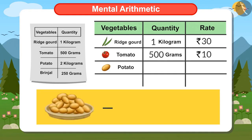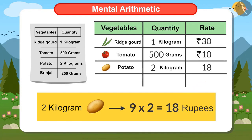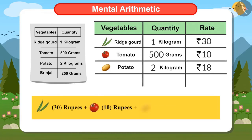Potatoes are 9 rupees a kilo, and I have bought 2 kilos of potatoes. To find the cost of 2 kilos of potatoes, I have to multiply 9 by 2. Nine twos are 18 — that is, I have to pay 18 rupees for potatoes. I will add this to the price of ridge guard and tomato, and the answer is 58 rupees.